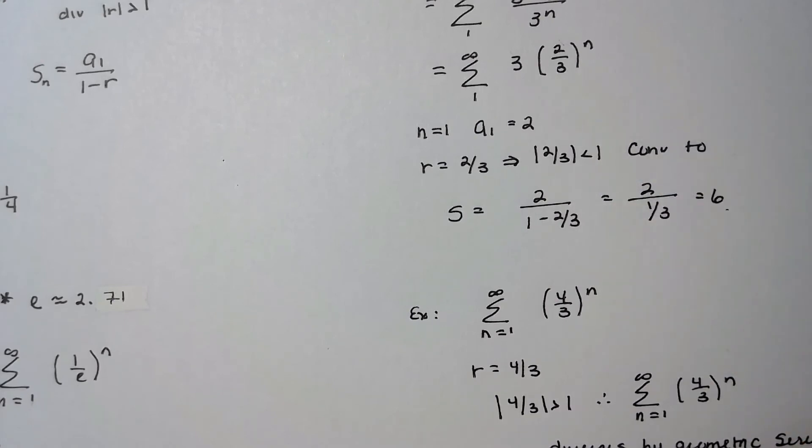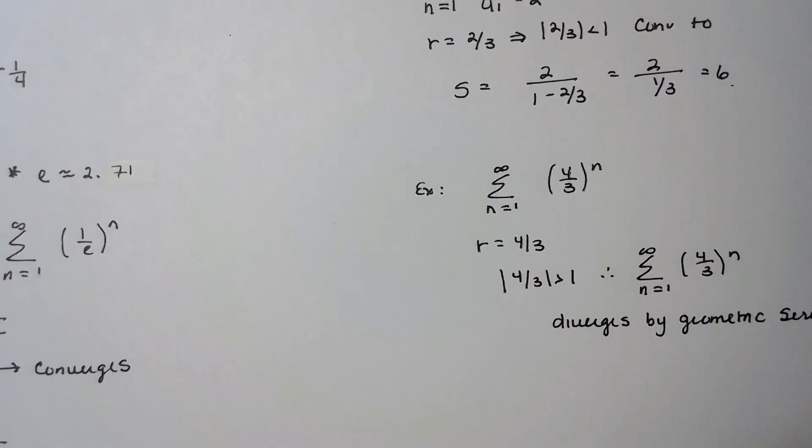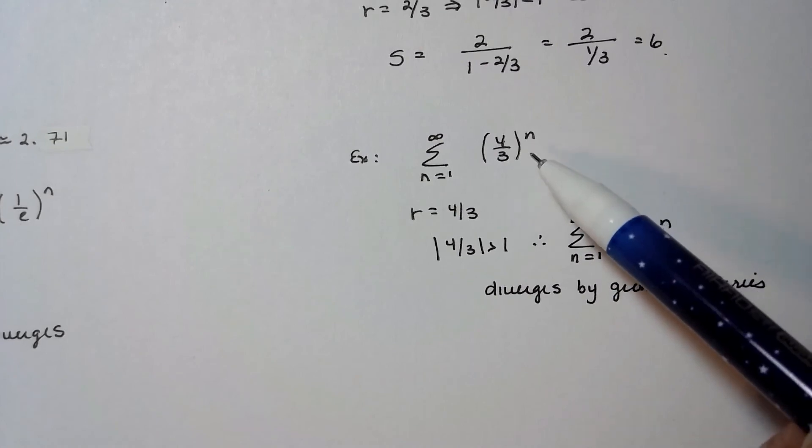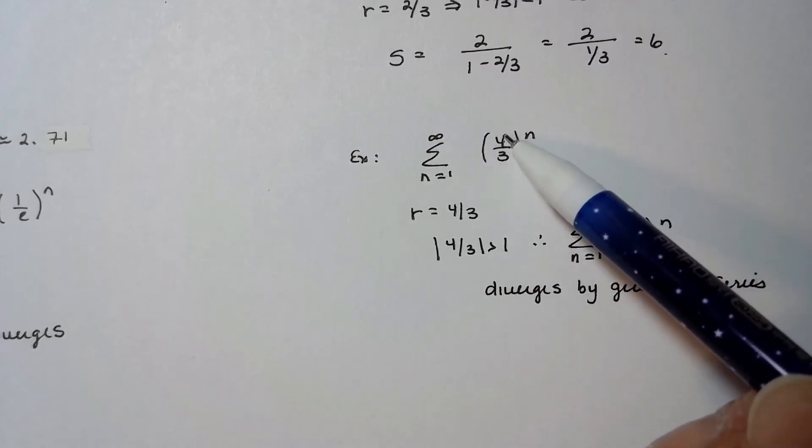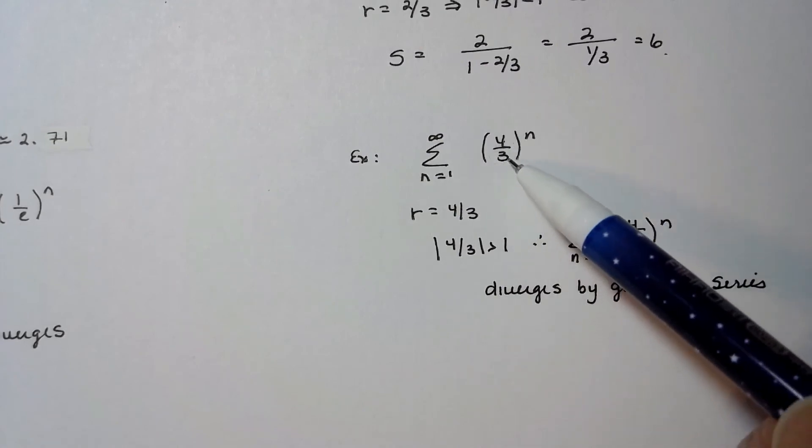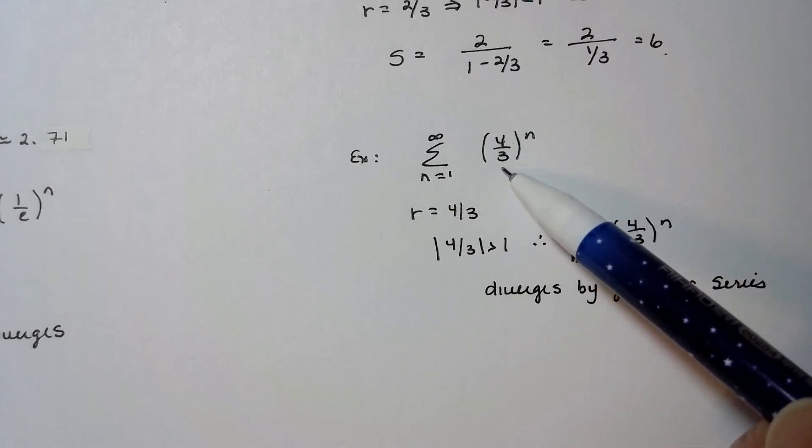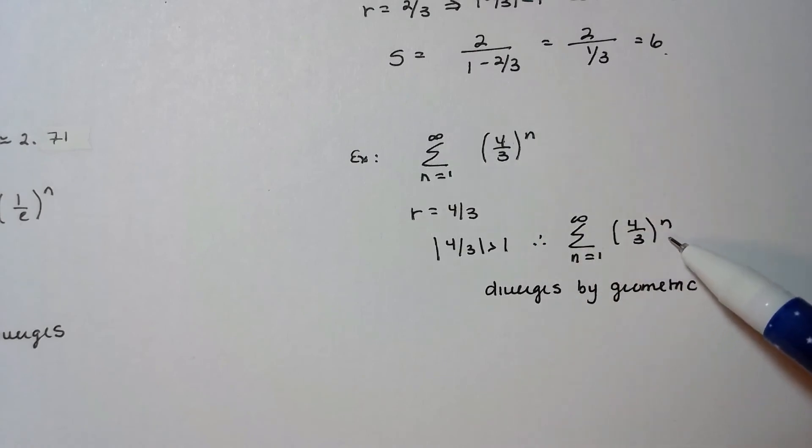And finally, here's one that diverges. In this case, it's blatantly obvious, right? This is my r, this is some number raised to a variable, and it's bigger than 1, so I know that this series is going to diverge. And that's it for geometric series.